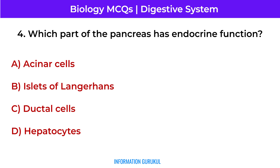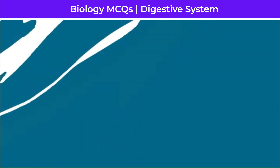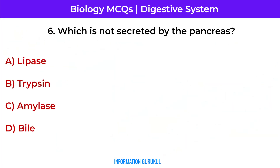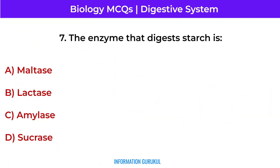Which part of the pancreas has endocrine function? The islets of Langerhans. Which of the following enzymes digests DNA? Nuclease. Which is not secreted by the pancreas? Bile. The enzyme that digests starch is amylase.